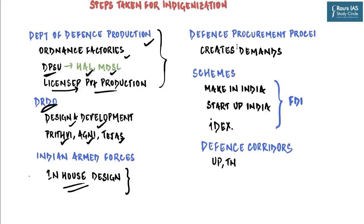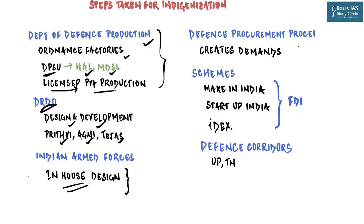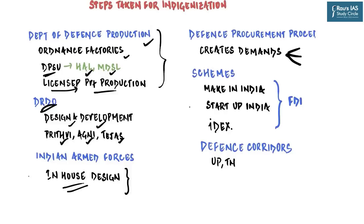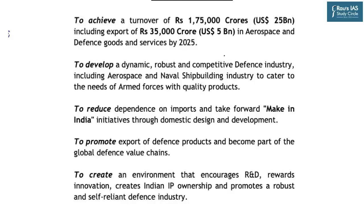The Draft Defence Procurement Policy 2020 aims to achieve a turnover of ₹1,75,000 crore (approximately $25 billion) including exports of around ₹35,000 crore in aerospace and defense goods and services by 2025. It intends to develop a dynamic, robust, and competitive defense industry including aerospace and naval shipbuilding to cater to armed forces' needs, reduce dependence on imports, promote export of defense products, and create an environment encouraging research and development, innovation, and Indian intellectual property ownership.